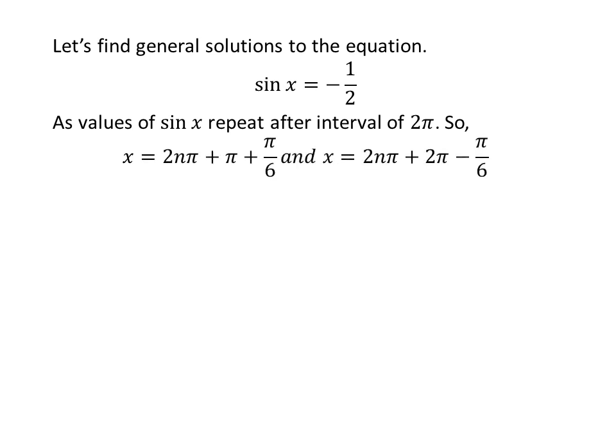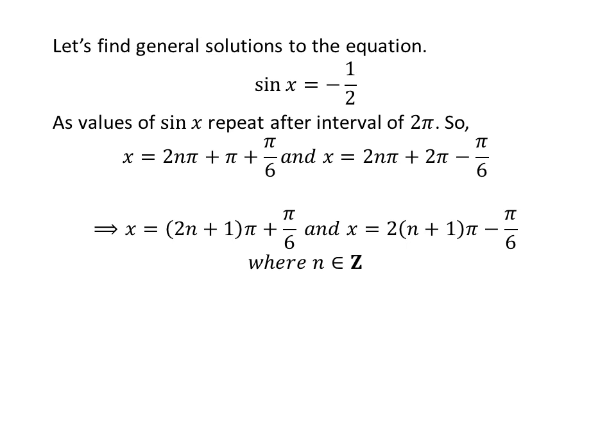Let us find the general solutions. As we know, the values of sin of x repeat after the interval of 2 times pi. So the general solutions are 2 times n times pi plus pi plus pi upon 6, and 2 times n times pi plus 2 times pi minus pi upon 6, where n is an integer. Further simplification gives us 2 times n plus 1 times pi plus pi upon 6, and 2 times n plus 1 times pi minus pi upon 6.